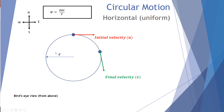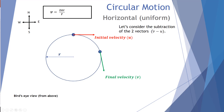Let's consider what happens if we subtract our velocity vectors. We have two points: position one and position two. At position one, the initial velocity is tangent to the path, perpendicular to the radius. At some time later at position two, the final velocity is also tangent to the path and perpendicular to the radius. Let's consider what happens when we subtract these two vectors — this is v and u.